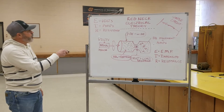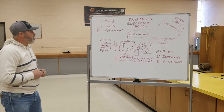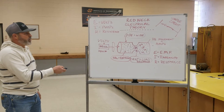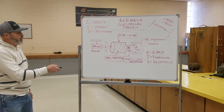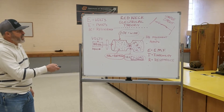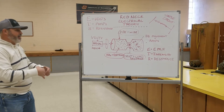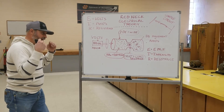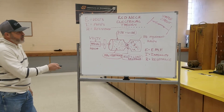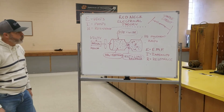E stands for electromotive force — we call it EMF. E is electromotive force. I stands for intensity; it's the amount of actual work, movement of electrons that's taking place. And R is resistance — that's the resistance to electron movement.